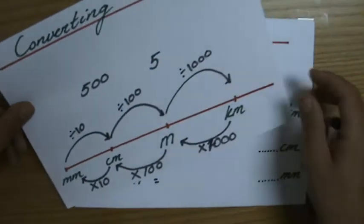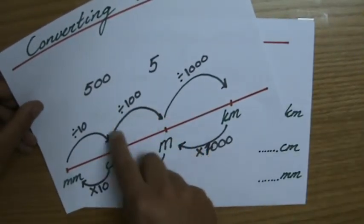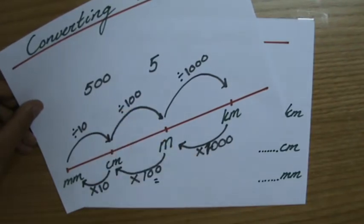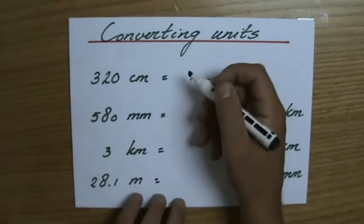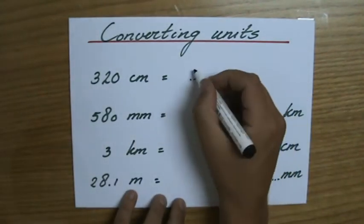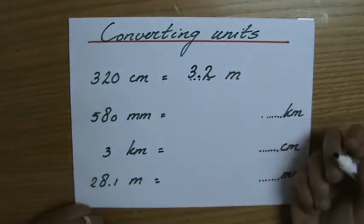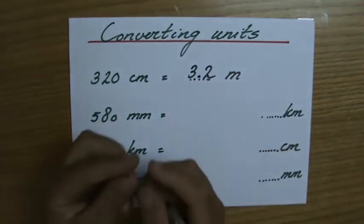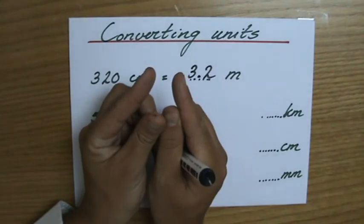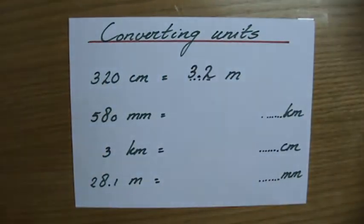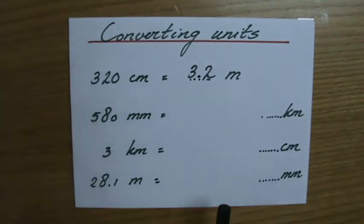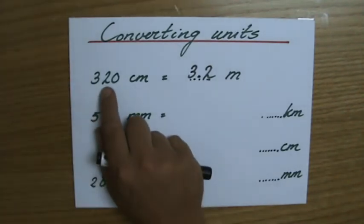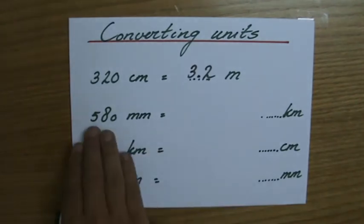From centimeters to meters is one step, so you divide by a hundred. So 320 centimeters equals 3.2 meters. One centimeter is roughly this length, and a meter is a hundred centimeters, so 300 centimeters are three meters, and then the extra 20 gives the 0.2.